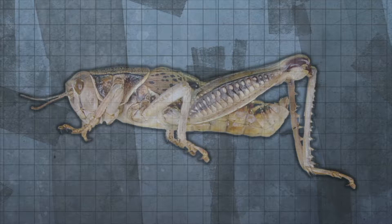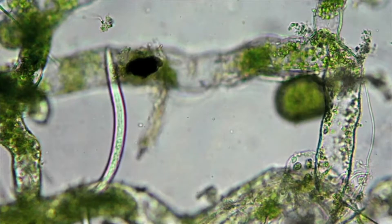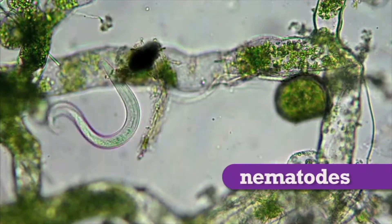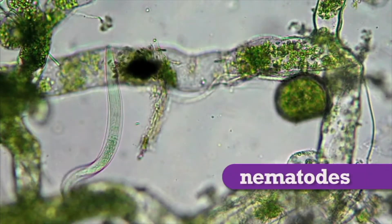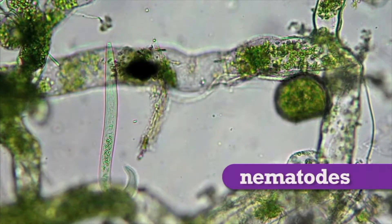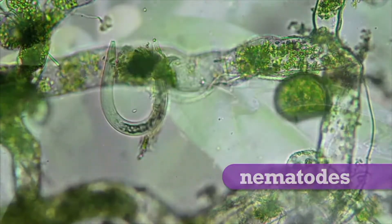From the gastrovascular cavity evolved the alimentary canal, a one-way digestive tract with two openings. Scientists believed that the first animals to have the alimentary canal were microscopic worms called nematodes. From nematodes, the alimentary canal evolved, resulting in many different types of digestive tracts.